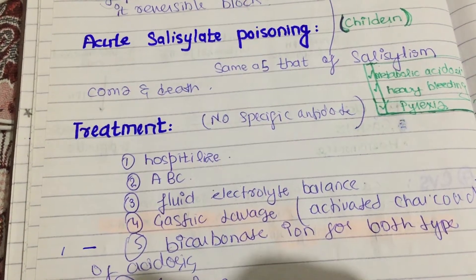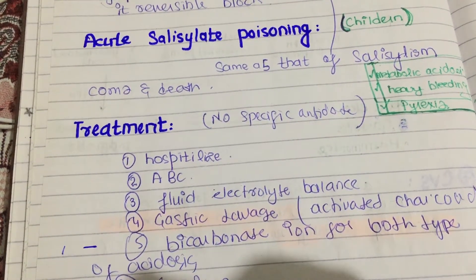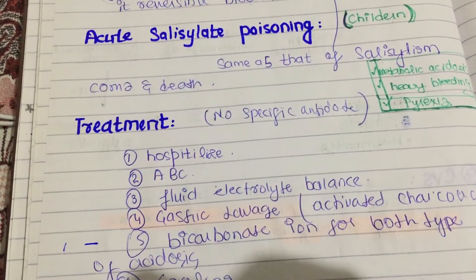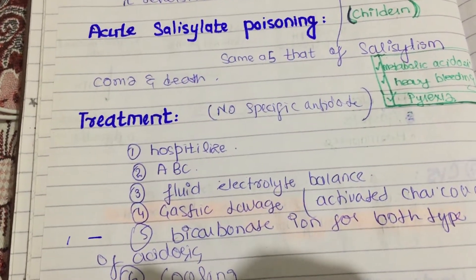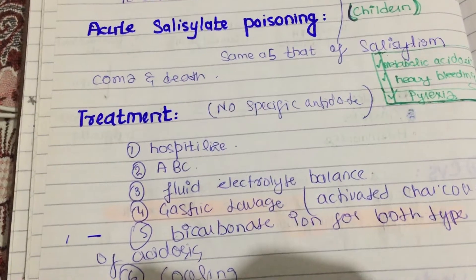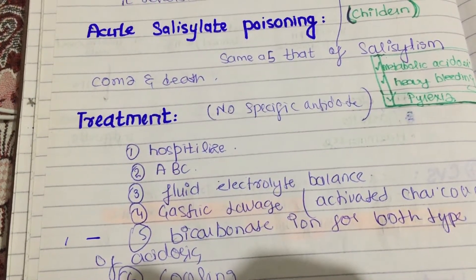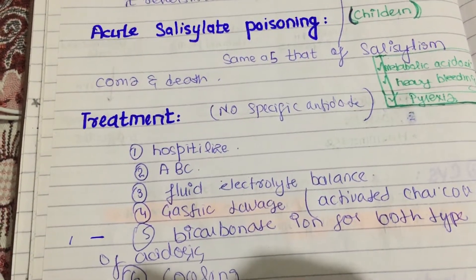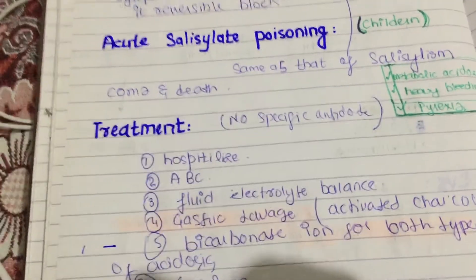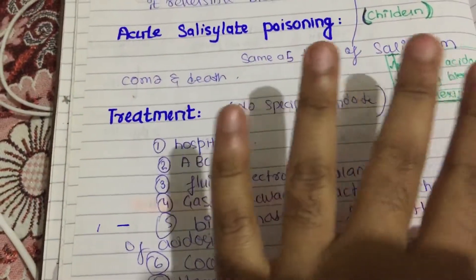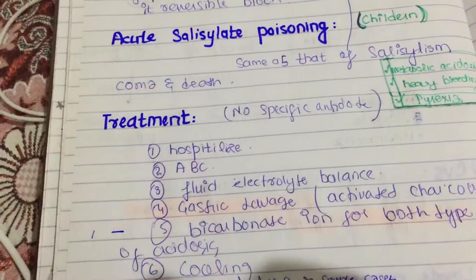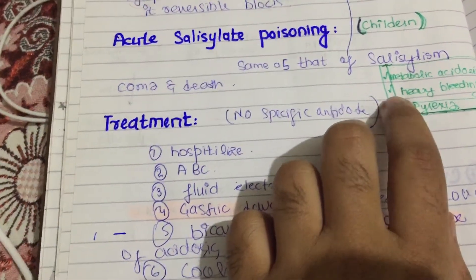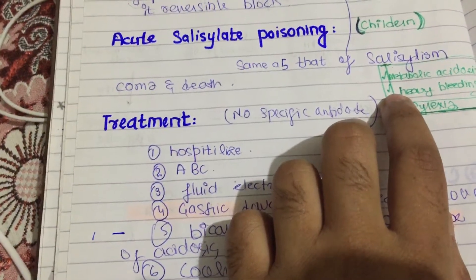Today we are going to study Acute Salicylate Poisoning. It has different symptoms such as nausea, vomiting, electrolyte imbalance, renal failure, hemolytic anemia, and hypoprothrombinemia. Remember to keep in mind the main symptoms: metabolic acidosis and hyperpyrexia.